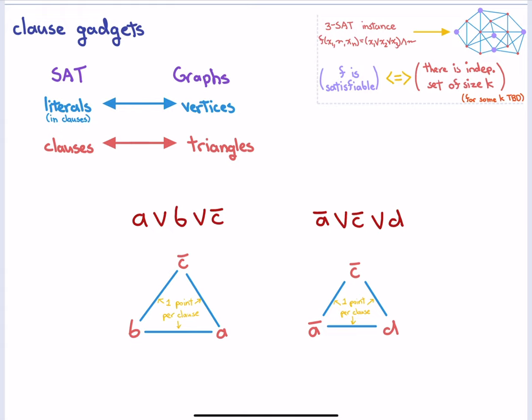There's one more step. We connect A and A-bar, because if I take A, I can't take A-bar. So we connect vertices whose labels correspond to opposite literals, because we can only take one or the other. We do that for every clause and all literals.